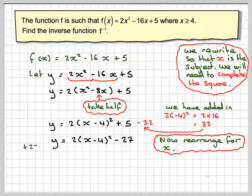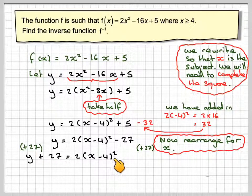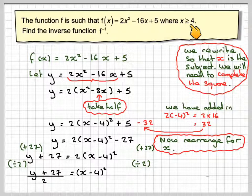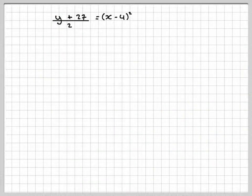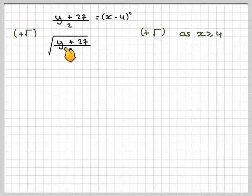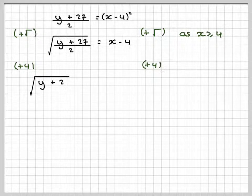The first step is to add 27 to both sides, giving y + 27 = 2(x - 4)². Next, divide by 2: (y + 27)/2 = (x - 4)². Now, remember that x is greater than or equal to 4. The opposite of squaring is taking the square root — and when you take the square root, you can take plus or minus. But we take the positive square root since x ≥ 4. So √((y + 27)/2) = x - 4, and adding 4 to both sides: x = √((y + 27)/2) + 4.